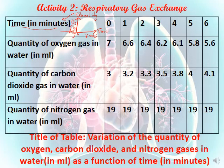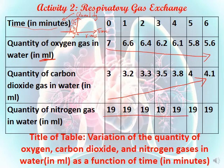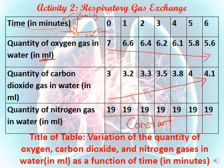As time increases from zero to six minutes, the quantity of oxygen gas in water decreases: it was 7, then 6.6, 6.4, 6.2, 6.1, 5.8, then 5.6 milliliters — so the quantity is decreasing. For carbon dioxide it was 3, 3.2, 3.3, 3.5, 3.8, 4, and 4.1 — so it's increasing. For nitrogen gas, it remains constant at 19 milliliters — it doesn't change.